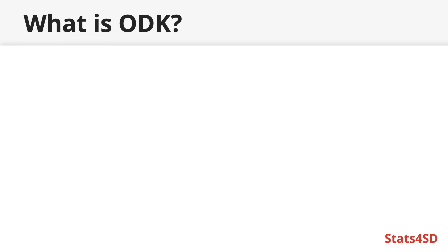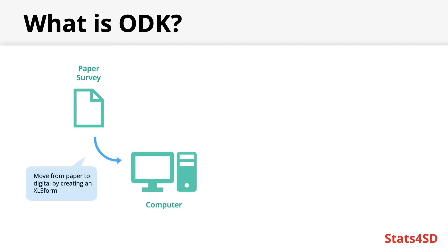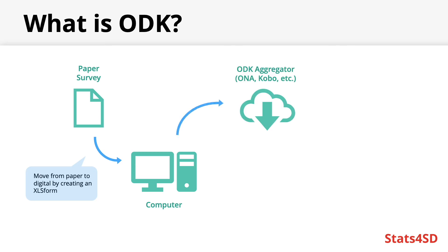Returning to what exactly ODK is: it is a system for facilitating easier collection of data using mobile devices. The different components all work together to assist you. We traditionally start with a paper survey. The first step in transitioning to ODK is moving from the paper survey to a digital form by creating your XLS form in Excel on your personal computer. We next move from the computer to the ODK aggregator server — whether that is Honor, Kobo, ODK Aggregate, or whichever server you have chosen. You will upload the XLS form you've created to the aggregator, which will automatically convert it for you.